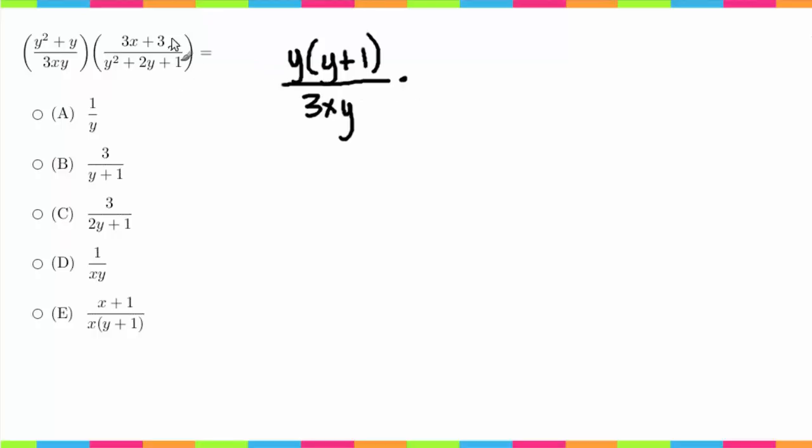Up here I can take a 3 out, so that's going to become x + 1. Now in the bottom I can factor this. What multiplies to 1? We only have one option, which is 1 times 1, and luckily that adds to 2. So this would become (y + 1) times (y + 1), which you could also write as (y + 1)², but I'm going to leave it like that because we're going to be canceling some things out.